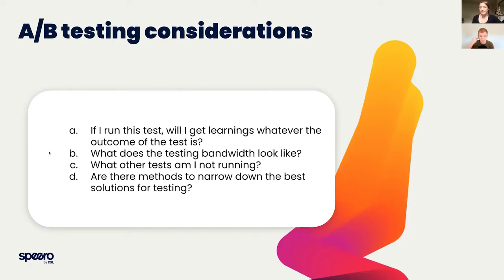A month to validate an idea where you may not even be completely sure this is the best solution to put in front of the audience — you end up having a month and a month and a month on iterations, losing a lot of time. Instead of those three months of testing, what are the other tests you could be running that might make more sense or be more beneficial for the business? There are quite a few considerations around whether you're ready to run that specific A/B test, or whether there are other methods that can help you in the process.